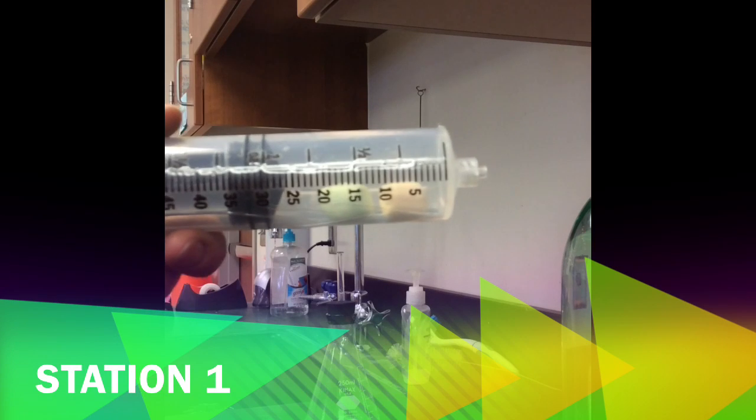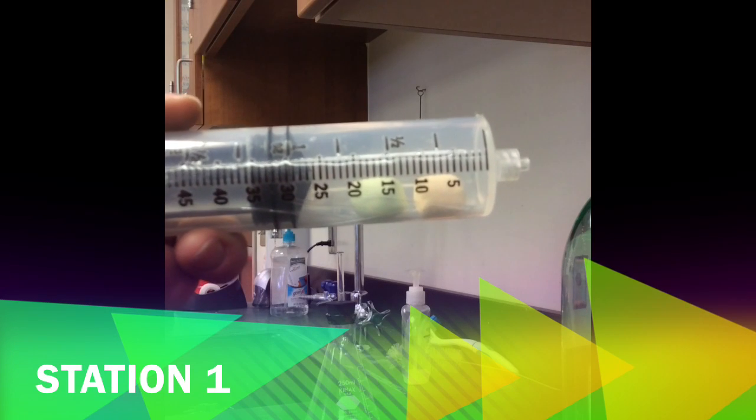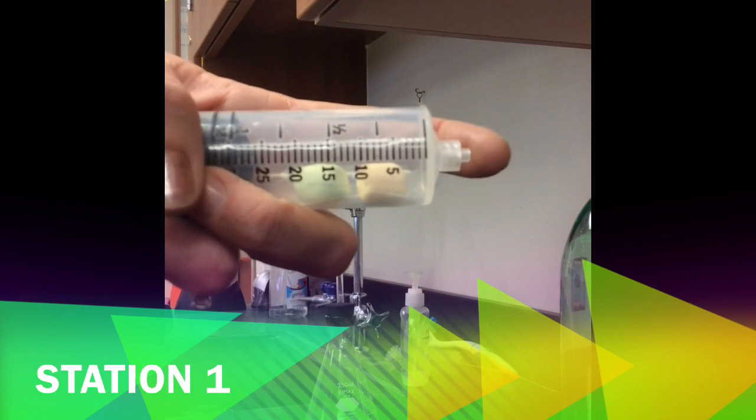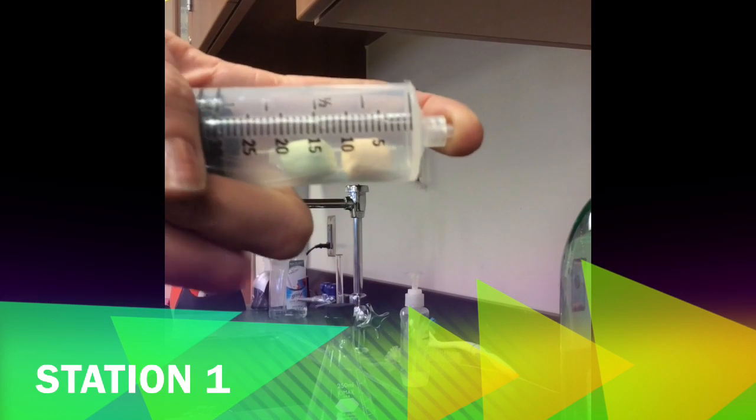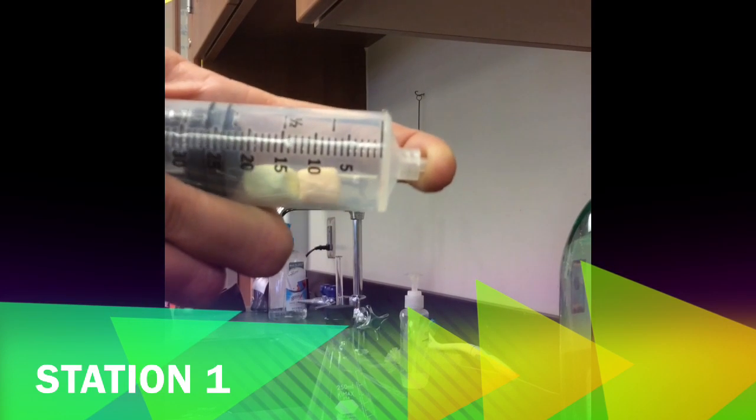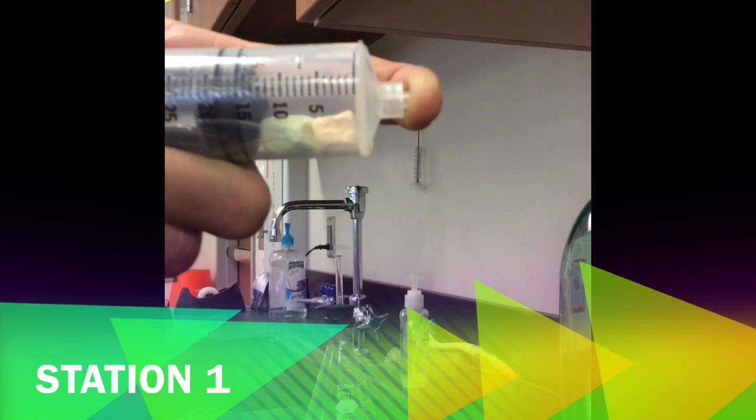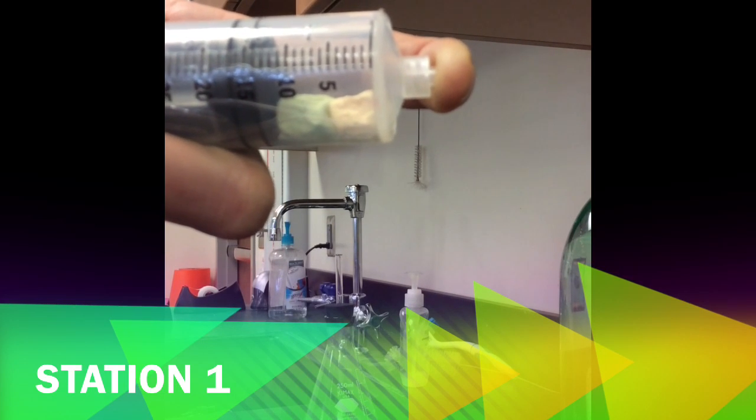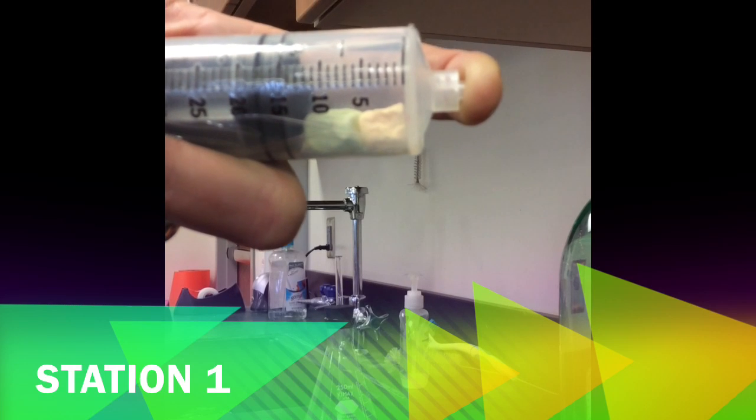At this station we have a syringe with marshmallows. This is station one and we've got it at the 30 milliliter mark. I'm gonna put my finger on the end and I am going to push down on the plunger and you should be able to see what happens to those marshmallows.